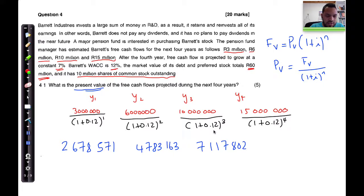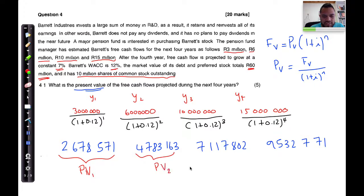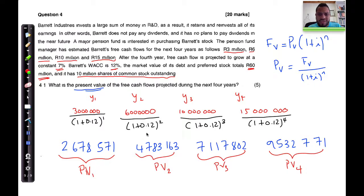PV of year three: ten million divided by (1.12)^3 = seven million, one hundred and seventeen thousand, eight hundred and two. PV of year four: fifteen million divided by (1.12)^4 = nine million, five hundred and thirty-two thousand, seven hundred and seventy-one. These give us PV1, PV2, PV3, and PV4 respectively.